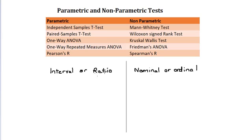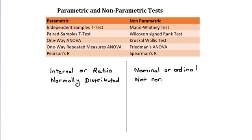In general, your data should be normally distributed if you want to use a parametric test. For non-parametric tests, your data does not have to be normal.